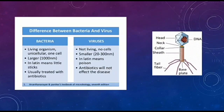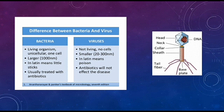Now, what is the difference between a bacteria and a virus? Bacteria are living organisms — they are unicellular, having one cell. On the other hand, viruses are not living and they have no cells; they are acellular, meaning they have no cells. Bacteria are larger than viruses, about 1000 nanometers, while viruses are smaller at 20 to 300 nanometers. In Latin, bacteria means 'little sticks' while virus means 'poison.' Bacterial diseases can be treated with antibiotics, but viral diseases cannot — for example, COVID-19 cannot be treated with any antibiotic.